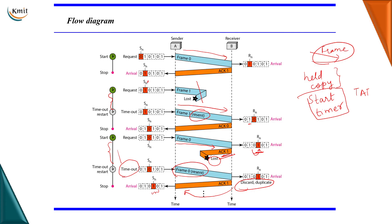This is how Stop and Wait ARQ works. The sender sends a frame, keeps a copy, starts a timer, and resends when the timer times out. On the receiver side, if a frame was received successfully but the acknowledgement was lost, that frame will be discarded as a duplicate. Otherwise it will be accepted. That was Stop and Wait ARQ.